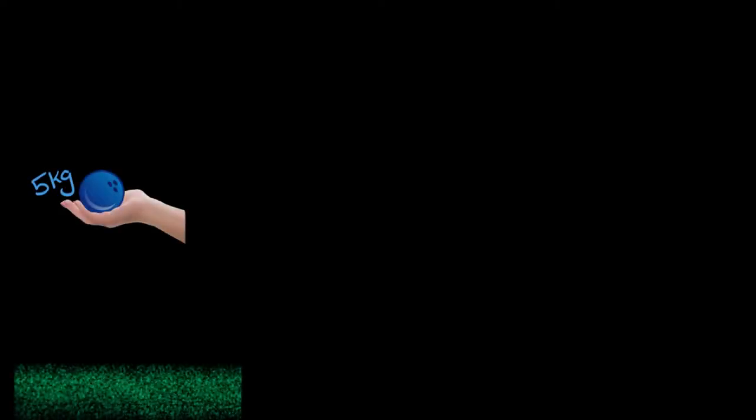Say we held a five kilogram bowling ball in our hand — I know bowling balls are a little larger than this — but imagine we held it at some distance from the ground. Then we say that it has potential energy. Why? Because if I let go of that ball, as it falls down, it's going to speed up and gain kinetic energy.